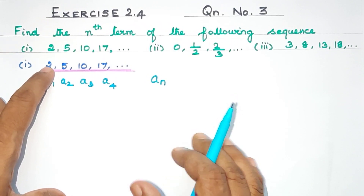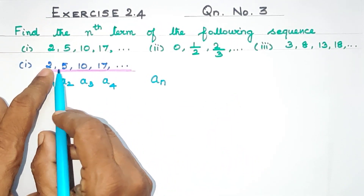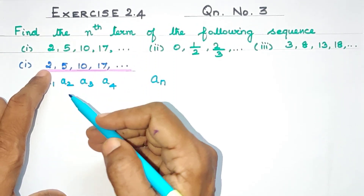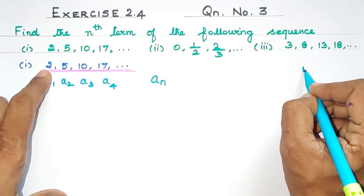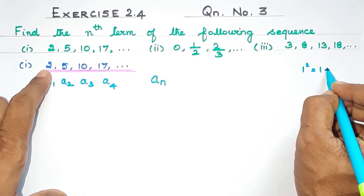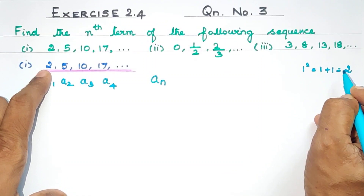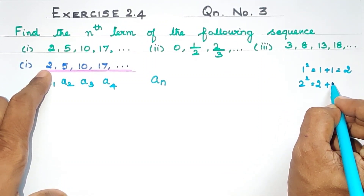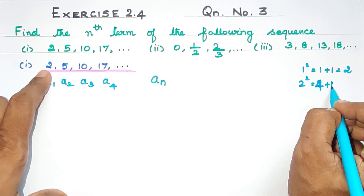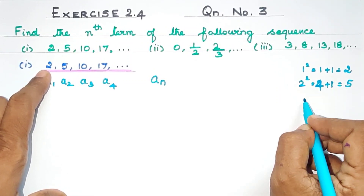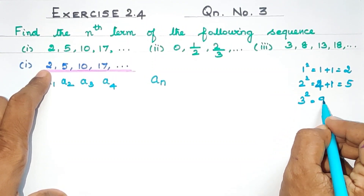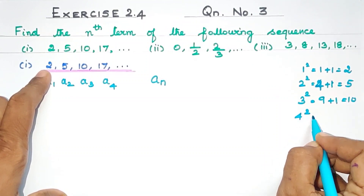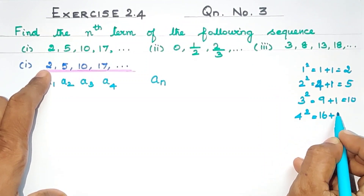Now, if you look at 2, I will tell you there is a very important observation. The number of square numbers: 1 squared is 1, and 1 plus 1 is 2. 2 squared is 4, and 4 plus 1 is 5. 3 squared is 9, and 9 plus 1 is 10. 4 squared is 16, and 16 plus 1 is 17.